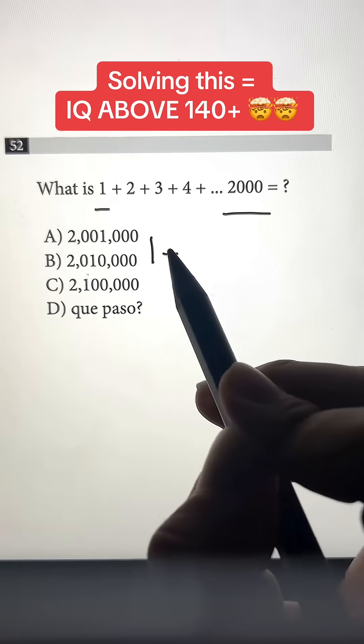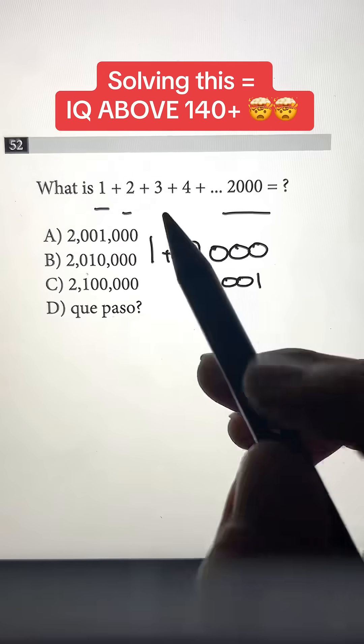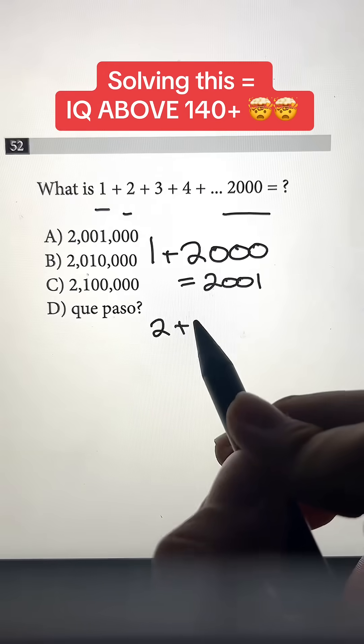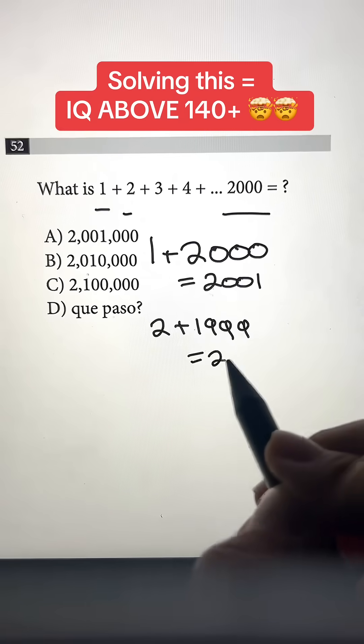If we take the smallest number in the pattern, 1, and we add that with the biggest number in the pattern, 2,000, we're going to get 2,001. Now if we take the second smallest number, 2, and we add that with the second largest number, which is going to be 1,999, we're also going to get 2,001 again.